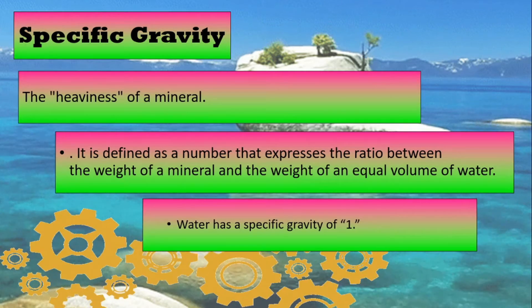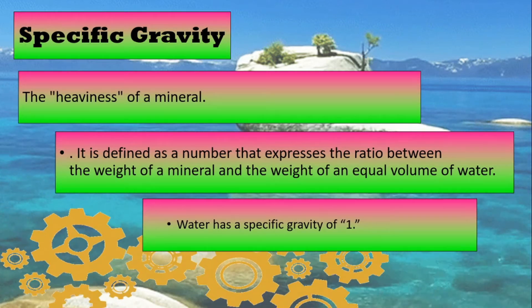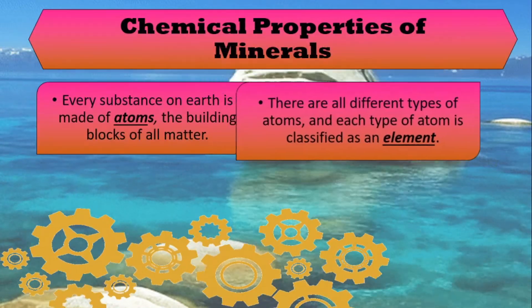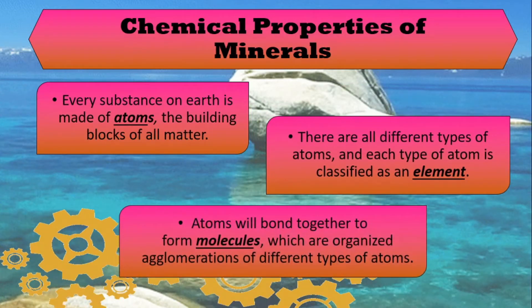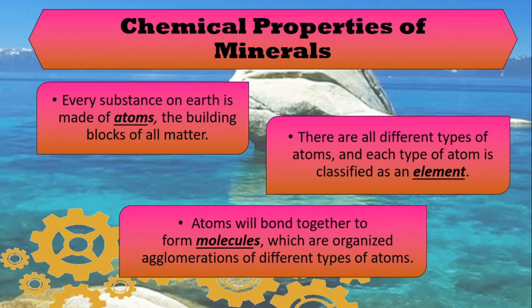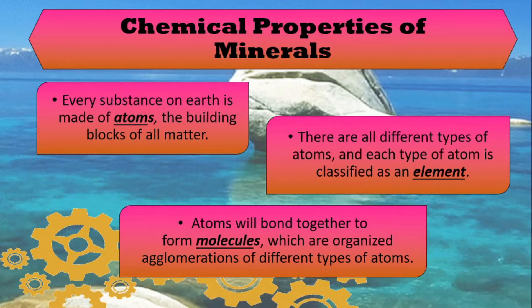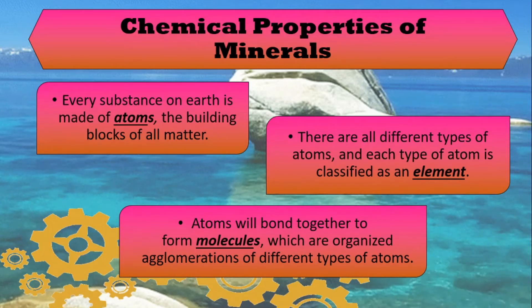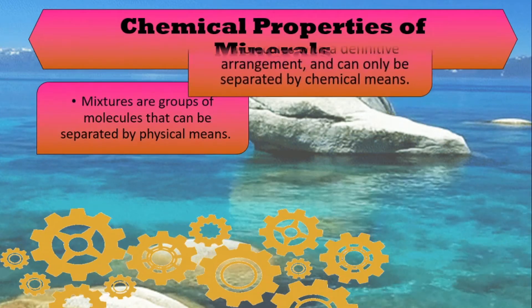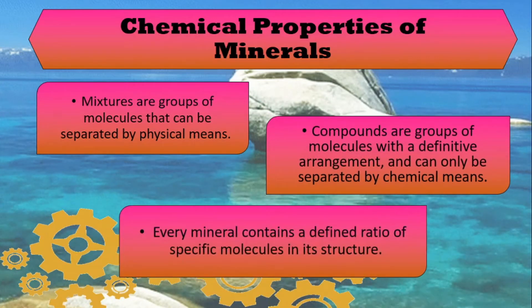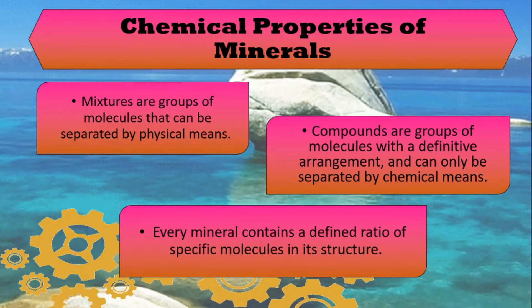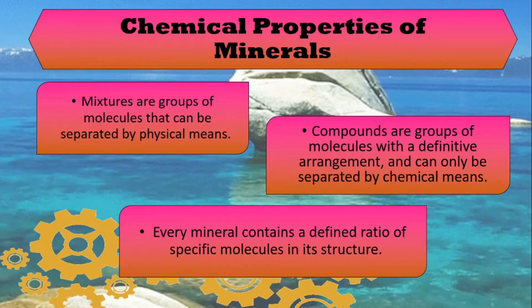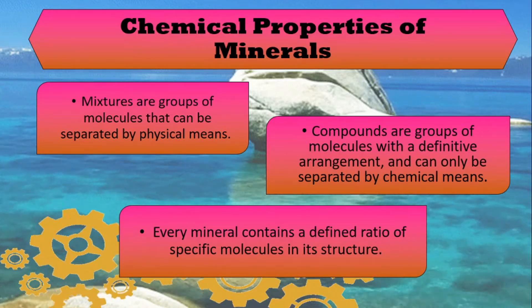Now that we have discussed the seven physical properties of minerals, let's proceed to the chemical properties of minerals. Every substance on earth is made of atoms, the building block of all matter. There are different types of atoms and each type is classified as an element. Atoms bond together to form molecules, which are organized agglomerations of different types of atoms. Mixtures are groups of molecules that can be separated by physical means. Compounds are groups of molecules with a definite arrangement and can only be separated by chemical means. Every mineral contains a defined ratio of specific molecules in its structure.